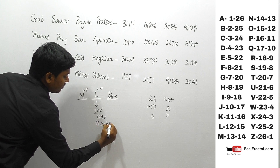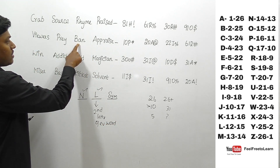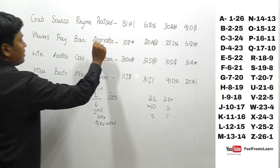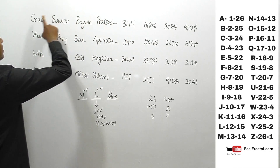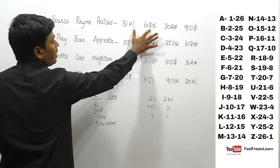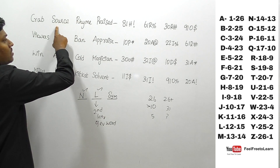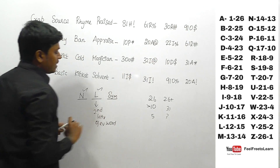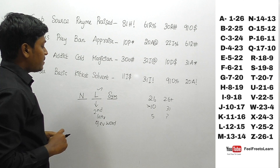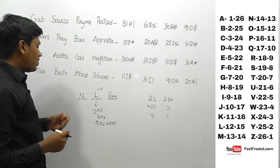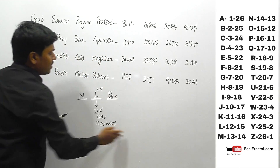We can confirm this pattern: for 'ban', the second letter is A, so A is used. For 'crab', the second letter is R — and indeed R is used. For 'source', the second letter is O. So the letter in the code is the second letter of every word.